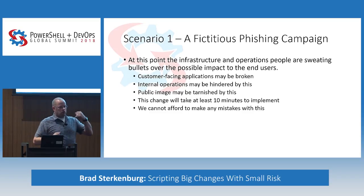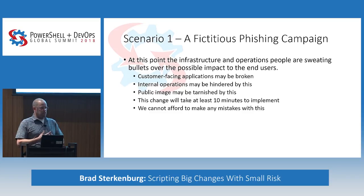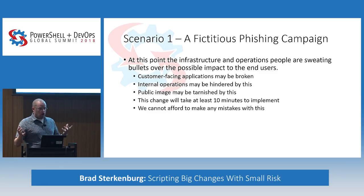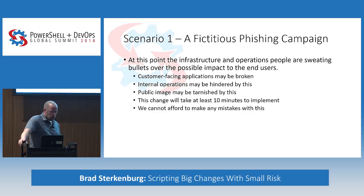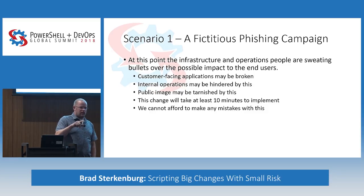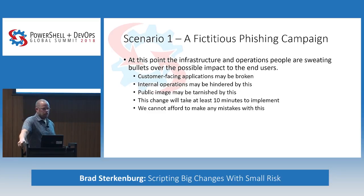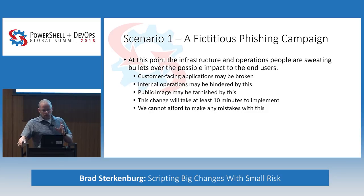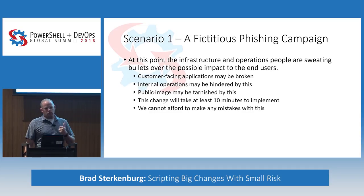Anybody who deals in Active Directory or Exchange knows that if you want to do a Get-CASMailbox on a 50,000 mailbox environment and then do a Set-CASMailbox on that same environment, it's going to take a little while. And let's go back to what our bosses said: we can't fail, we can't take any risks, we can't do anything that would break anything. No matter how well we plan for the changes, inevitably we're going to make mistakes in our implementation path.